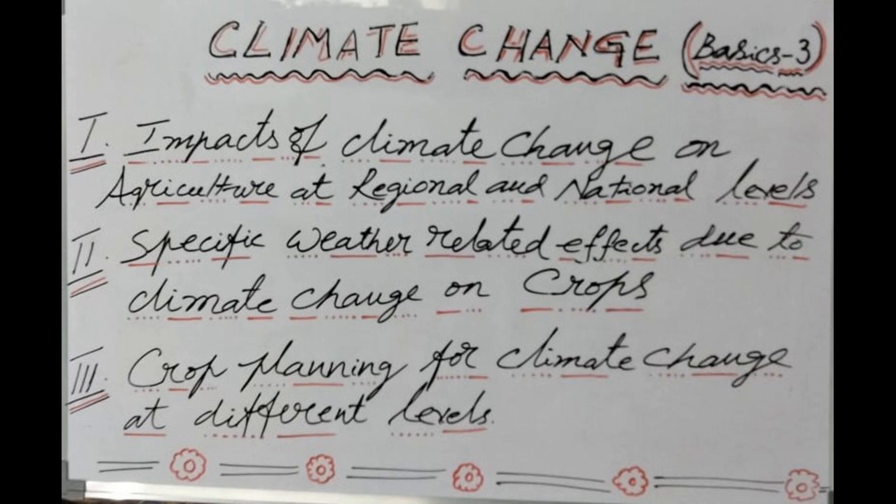To sum up, in this class we tried to understand three topics: the impacts of climate change on regional and national level agriculture, specific weather-related effects due to climate change on crops, and crop planning for climate change at various levels. Please do not forget to share the content with your friends and classmates to spread the knowledge, and do like, comment, and subscribe for more educational and informative videos. Thank you and may God bless you.